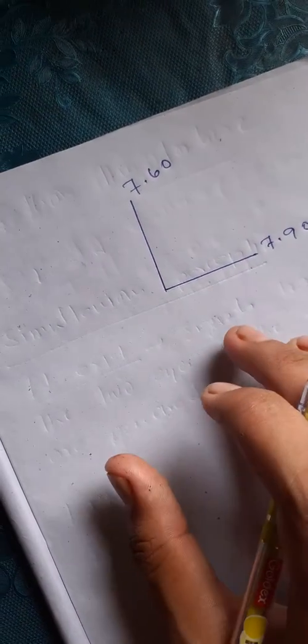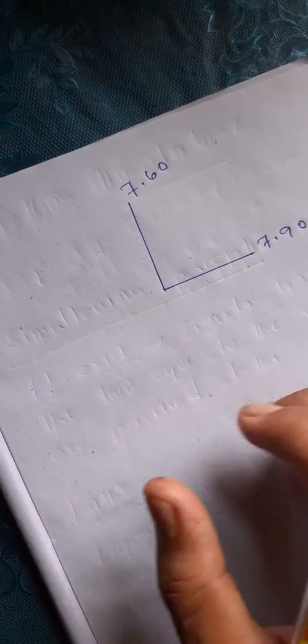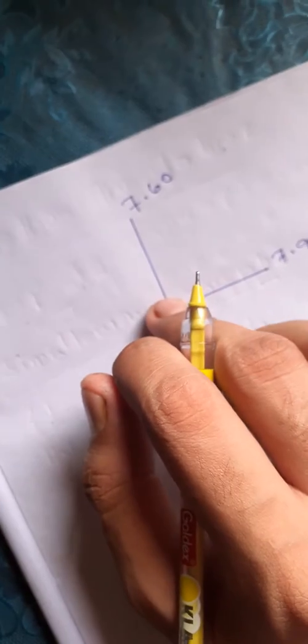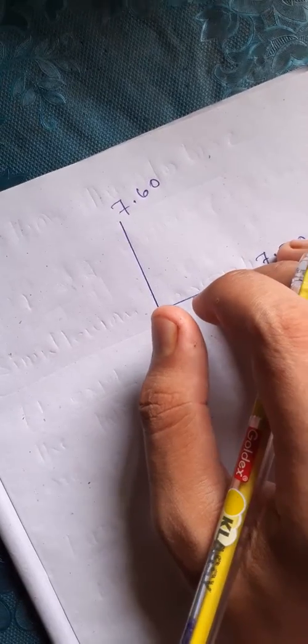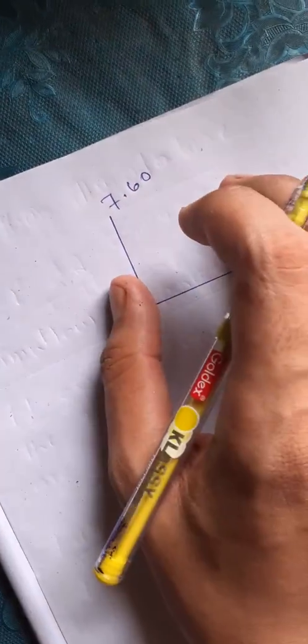Hello friends, today we are going to learn how to find out base curve reading from keratometry value. This is vertical corneal curvature, this is horizontal corneal curvature. To find out the base curve from this keratometry value, we need to follow some steps.